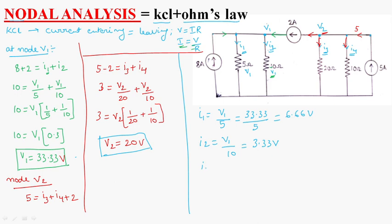Similarly, I3 is equal to V2 by 20. What is V2? V2 is itself 20, 20 by 20 is equal to 1 volt. And I4 is V2 by 10, which is equal to 20 by 10 is equal to 2 volts.